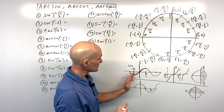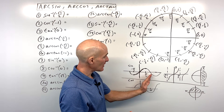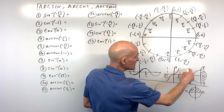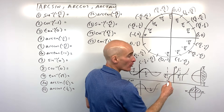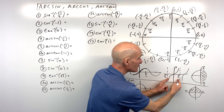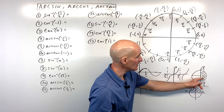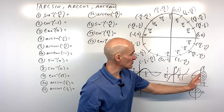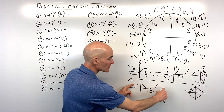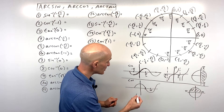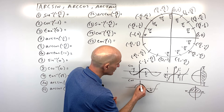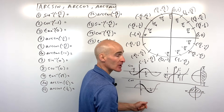We're restricting sine and tangent from negative pi over two to positive pi over two. Tangent also repeats and fails the horizontal line test, so its inverse is not a function unless we restrict it to the same range — putting us in the first and fourth quadrants. For cosine, it also repeats and fails the horizontal line test unless we restrict it from zero to pi, which covers the first and second quadrants.